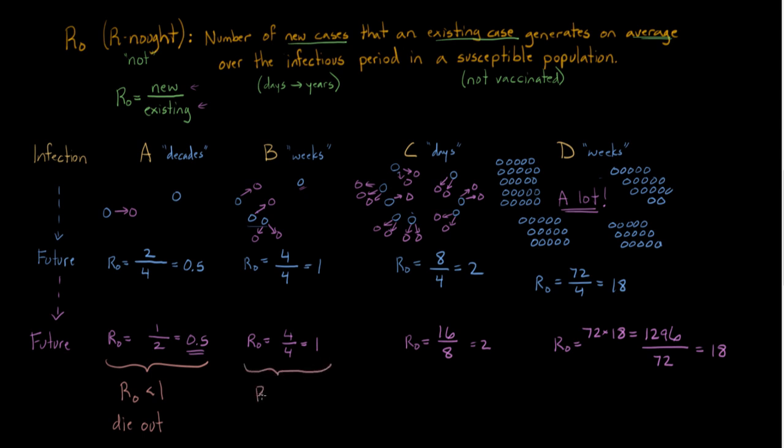Over here, when R-naught equals one, exactly one, it's going to be stable. Moving over time, you see that the same number of people, in this case four, are going to have the infection. Over here, when R-naught is greater than one, and it depends on how much greater, it's going to spread. So the infection is spreading. This is why this number is so important. It's helpful.